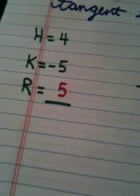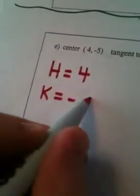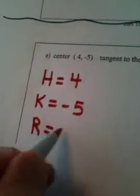So, when I go back to my paper to answer my question, I know that h is 4. I know that k is -5. And by drawing my picture, I see that the radius is 5.